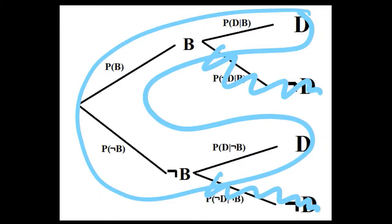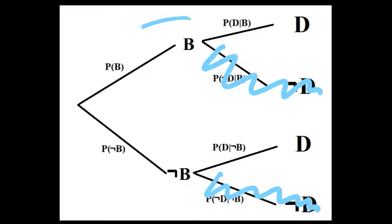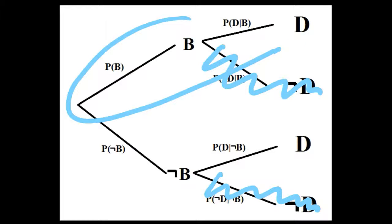Note that the denominator is the same equation as the total probability for having a defective Frisbee. And in the numerator, we are seeing what is the probability that we are in the new machine area, given that we have this defective Frisbee as well.